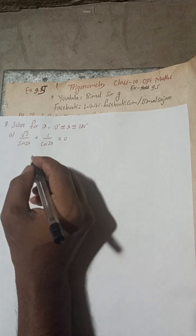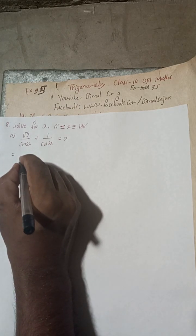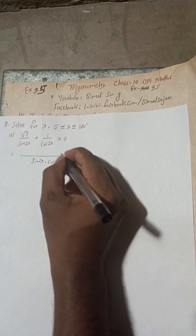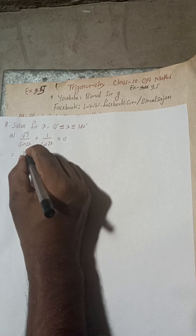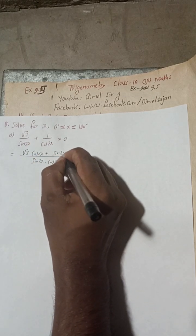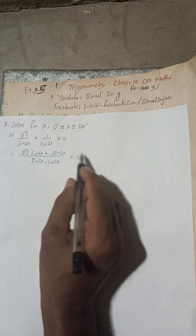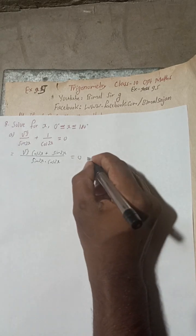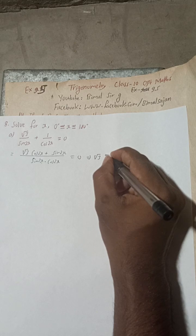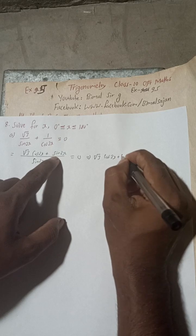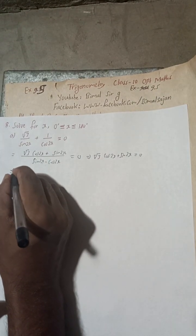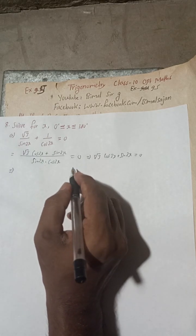We take the LCM here. Since the denominators are different, the LCM will be sin 2x times cos 2x. So on this side it becomes: root 3 times cos 2x plus 1 times sin 2x equals 0. When the denominator goes to the other side it multiplies with 0, so the remaining part gives us: root 3 cos 2x plus sin 2x equals 0.